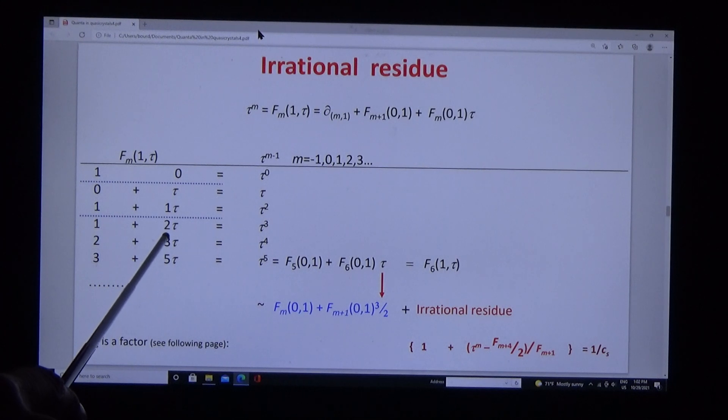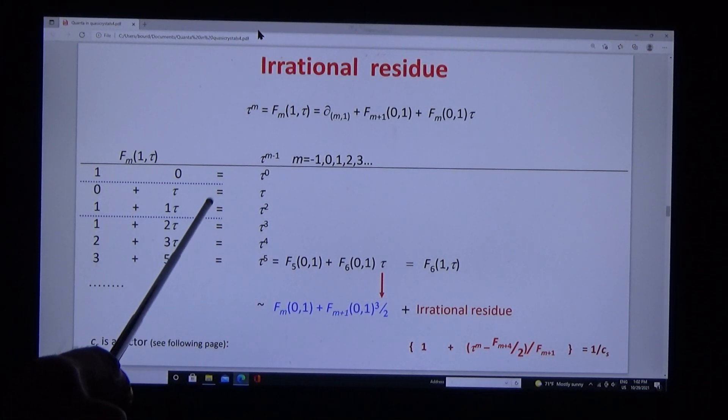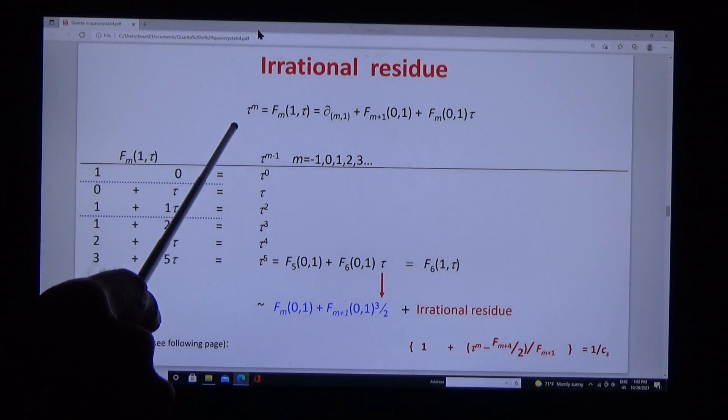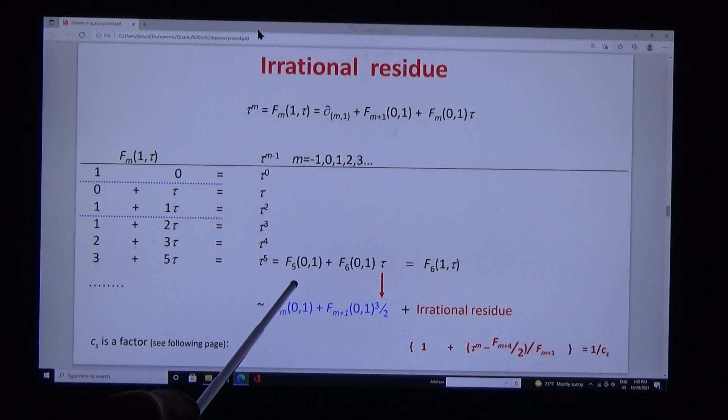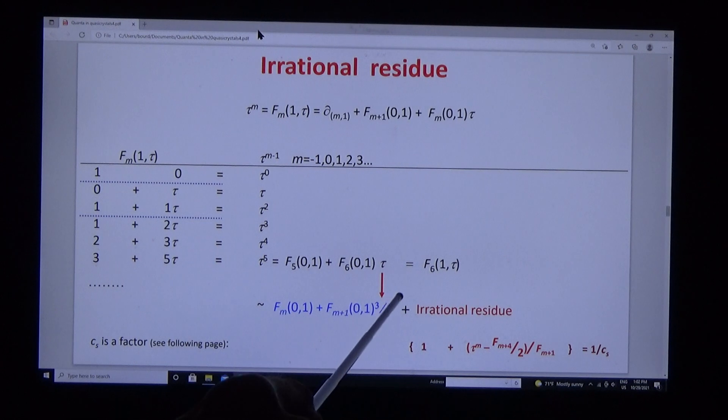You can approximately rationalize this by substituting for tau the value of three halves. Then you get approximate natural values for the order. If you subtract this natural value from the order, you get an irrational residue. This has a very important property: it is the exact inverse of the coherence factor that we calculated numerically and independently by the quasi-structure factor.